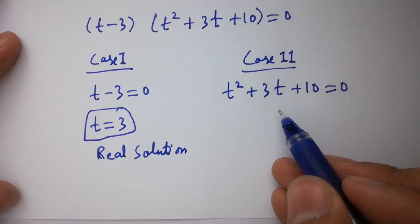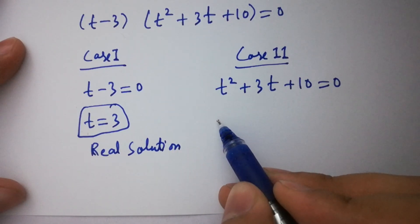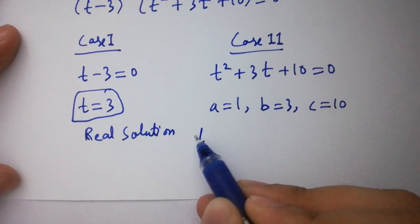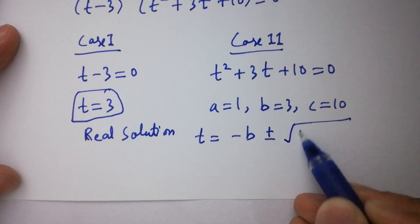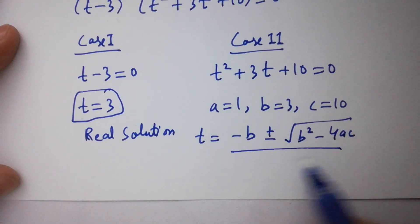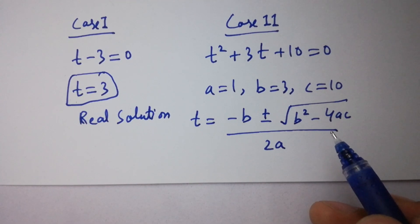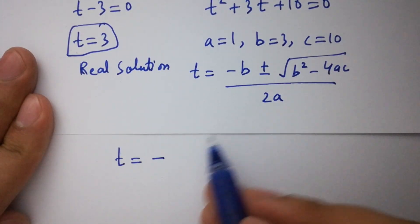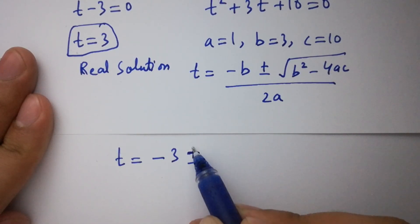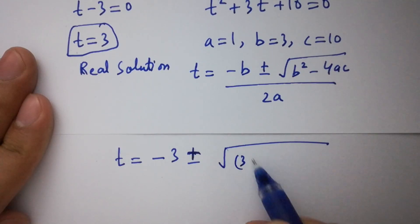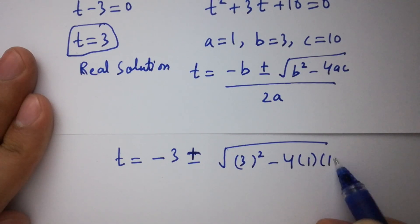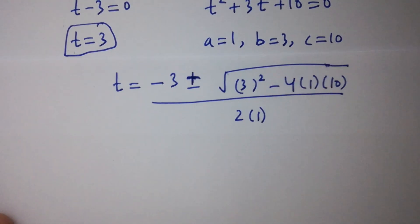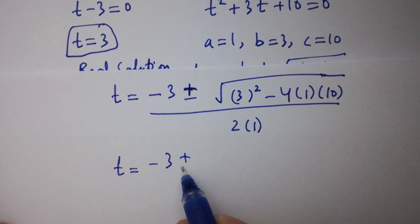From case two we have a quadratic equation with a equal to 1, b equal to 3, and c equal to 10. Applying the quadratic formula: t equal to minus b plus or minus square root of b square minus 4ac, all over 2a. Putting in the values, we have t equal to minus 3 plus or minus square root of 3 square minus 4 times 1 times 10, over 2 times 1.